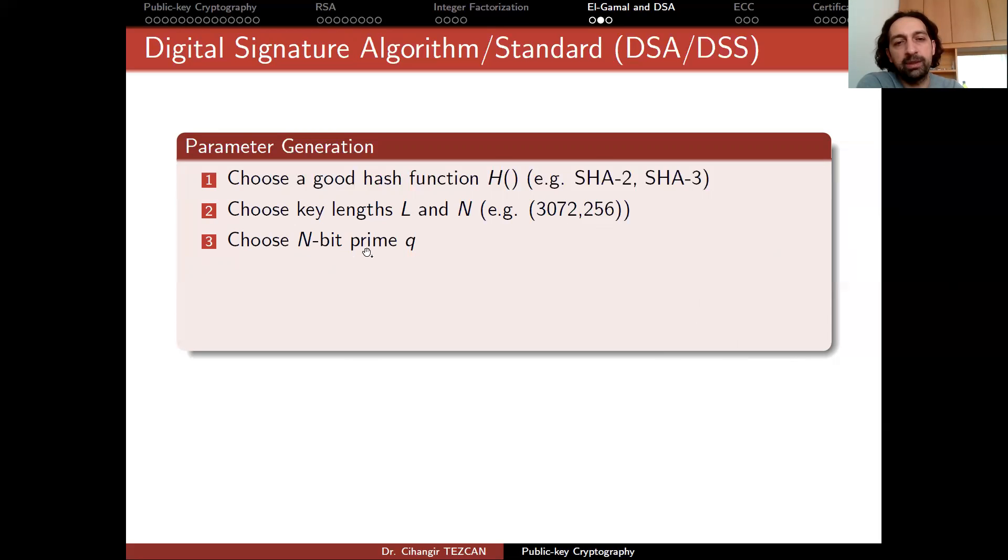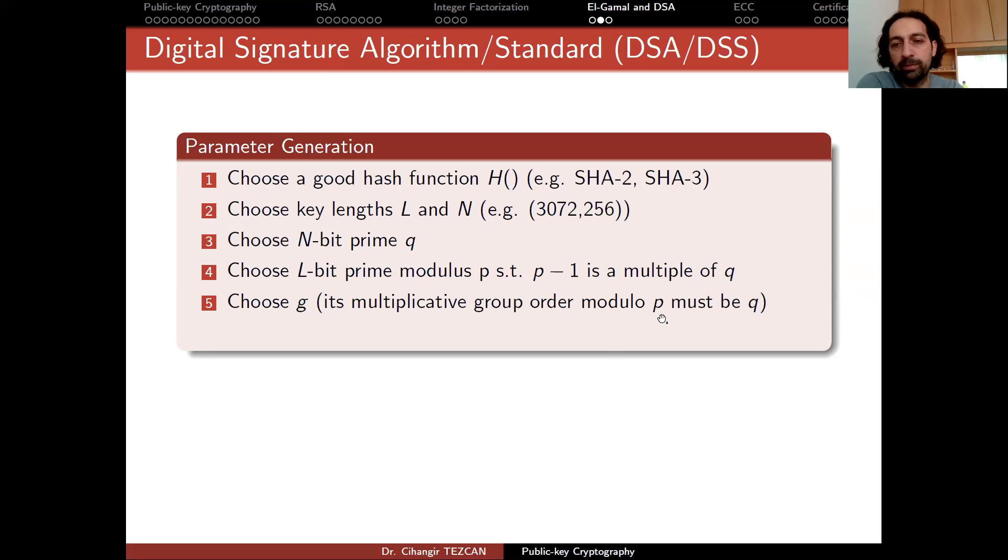So you choose an N bit prime Q, which is 256 bits if you choose these parameters. Now you choose L bit prime modulus P such that P minus 1 is a multiple of Q. Choose G. Its multiplicative group order modulo P must be Q.